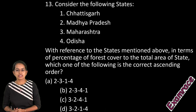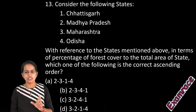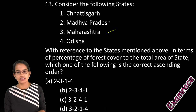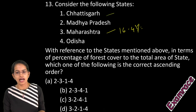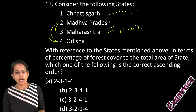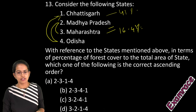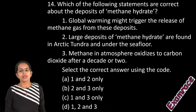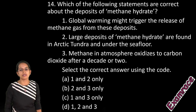The next question is about forest cover as a percentage of total area. Maharashtra has the least at approximately 16.4%, while Chhattisgarh has the most at around 41%. After Maharashtra, the next lowest is held by Madhya Pradesh. So the correct order is 3, 2, 4, and 1.